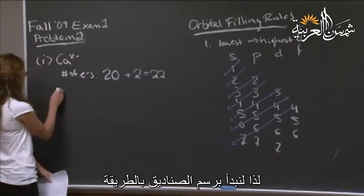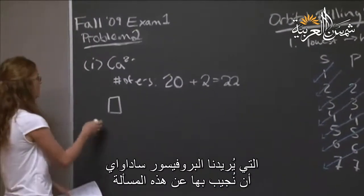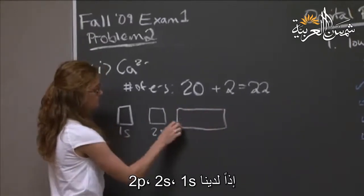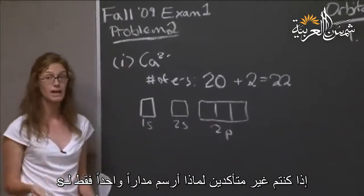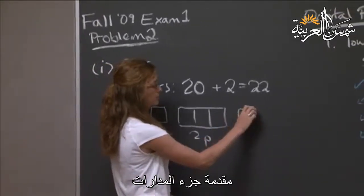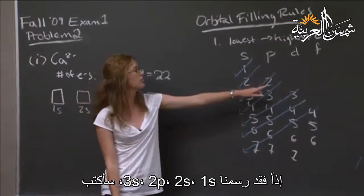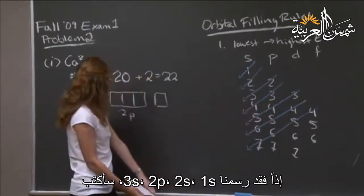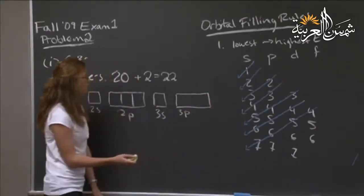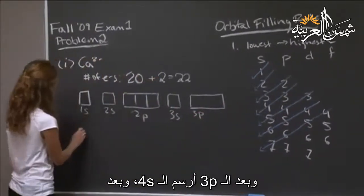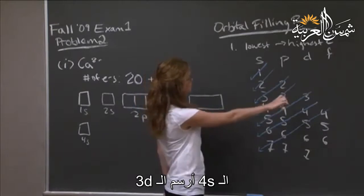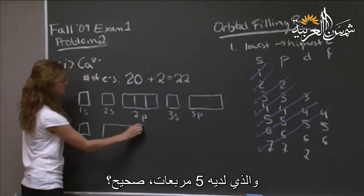So let's start writing out our boxes, which is how Professor Sadoway wanted us to answer this problem. So we have our 1s, our 2s, 2p. If you're unsure why I'm only drawing one orbital for s and three orbitals for p, again you might want to go review that beginning orbital material. So we have 1s, 2s, 2p, 3s, 3p, and after the 3p we do the 4s. And after the 4s we do the 3d, which has five boxes.